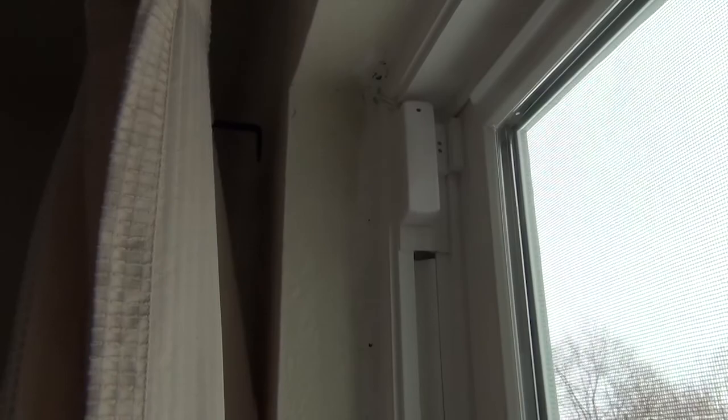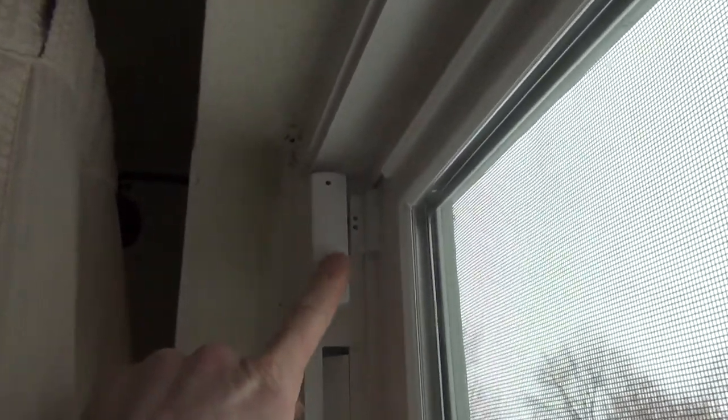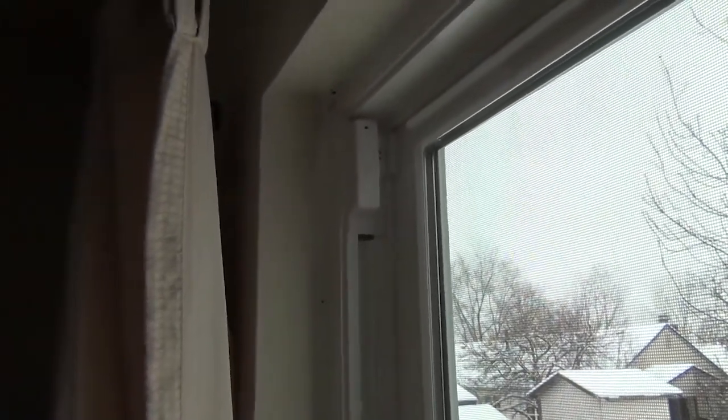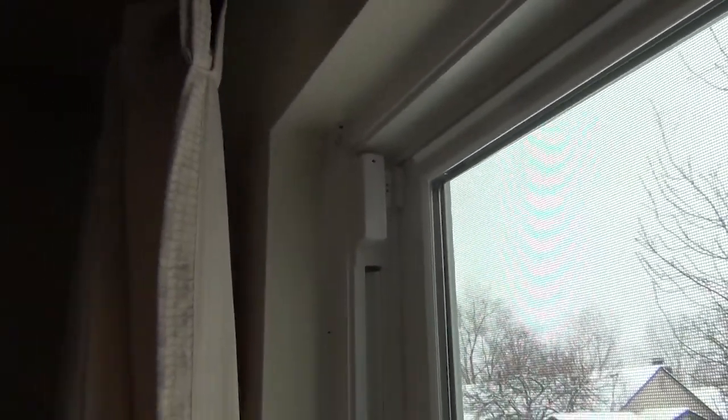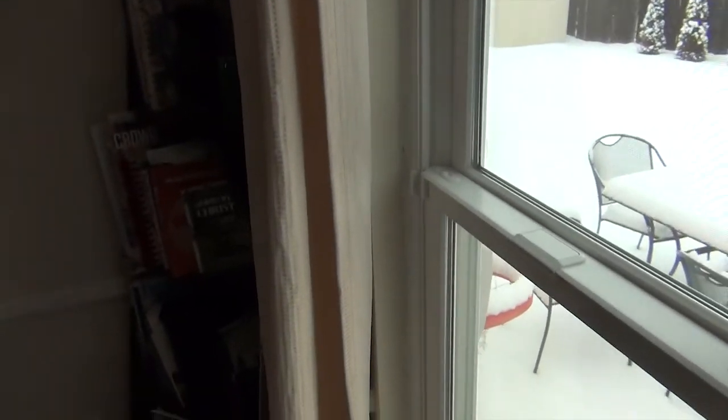Thanks to some reviews on Amazon, someone pointed out that underneath this white cover, there are some contacts that you can use to attach cheap wired sensors. So I have wired some of my rooms. In this window, for example, I have some wired contacts. They're just cheap, normally open wired contacts to each of my window panes.